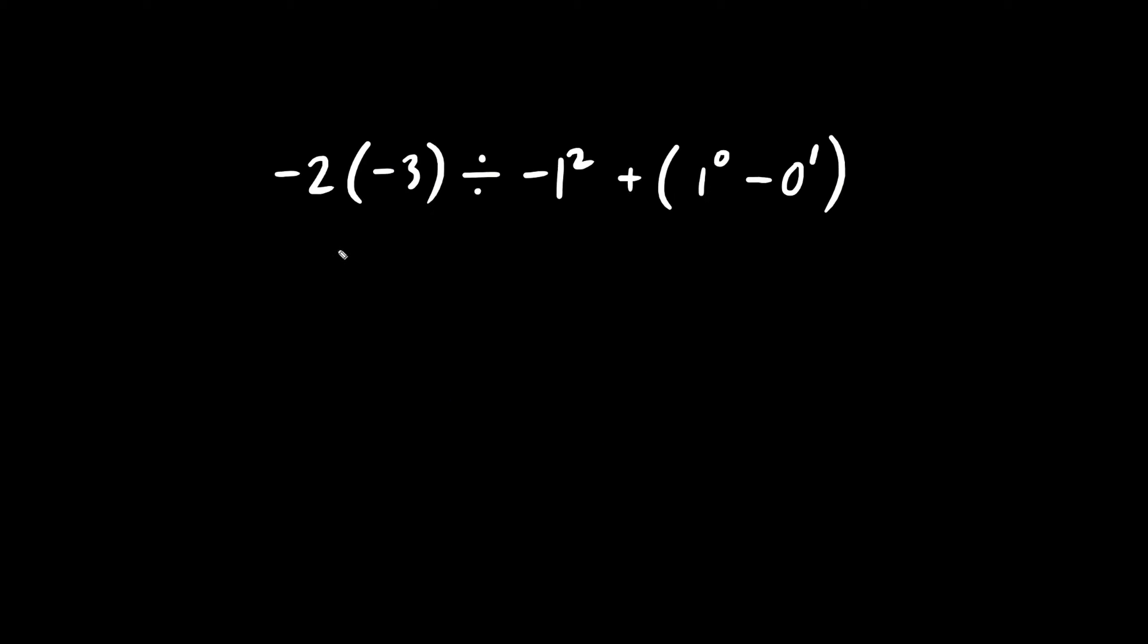Let's continue with these BEDMAS questions. We have negative two bracket minus three. And we know that there's a hidden multiplication symbol here. Negative times negative is positive. And two times three is six. We're dividing by negative one squared. Now this is definitely a negative number. And one times one is one. So we're dividing by negative one.